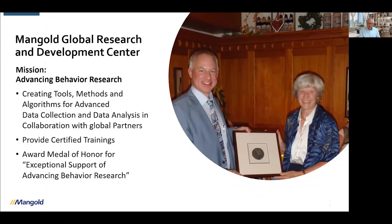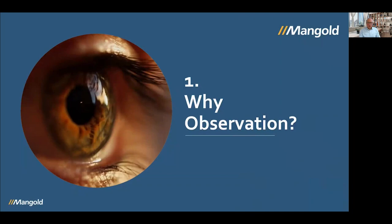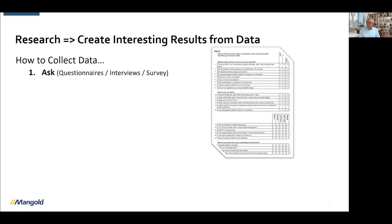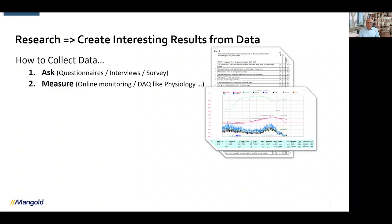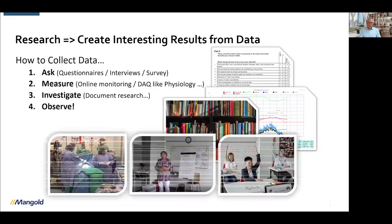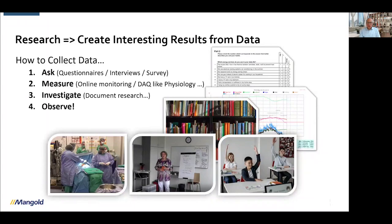Why do we want to observe anything at all? In research we need to create results from data. We can ask something — we can work with questionnaires, interviews, surveys. We can measure physiology or do online monitoring. What we cannot ask or measure, we need to investigate through other methods, for example document research. But obviously there are lots of things that cannot be discovered through those three methods, and that requires observation. Especially in psychology, where a lot of research is done with children who cannot answer questionnaires.